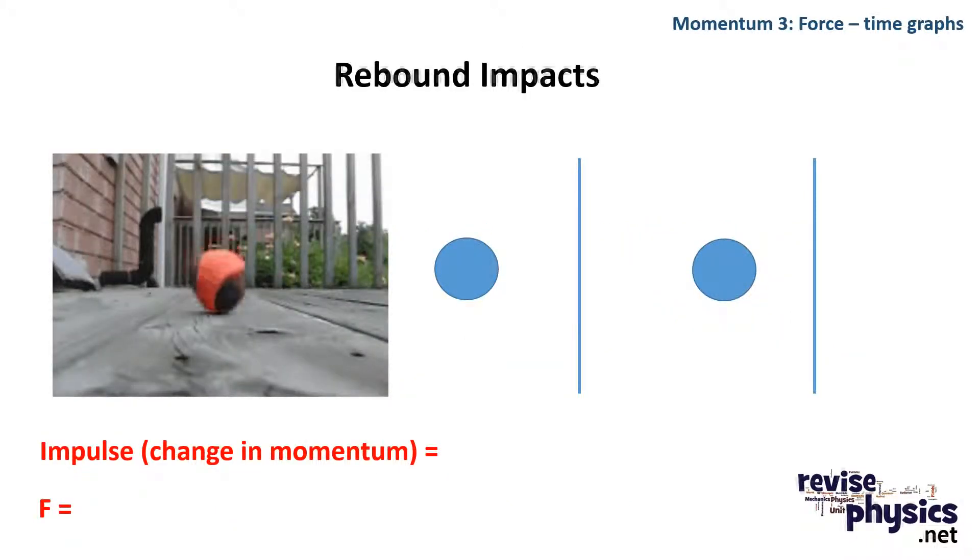Now, things are a little bit different when you get a rebound rather than something colliding with another object. Here the basketball is falling down and it changes its direction as it rebounds. If we look at our before and after here, before heading towards this wall here, this ball has got a velocity v, so therefore its momentum is going to be mv.